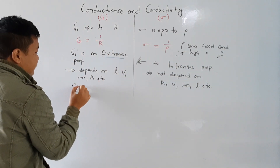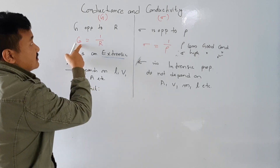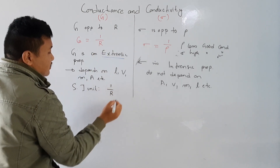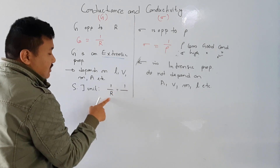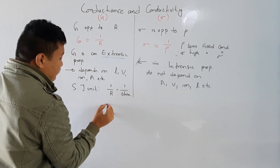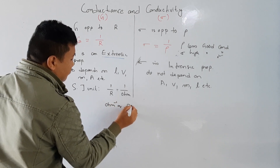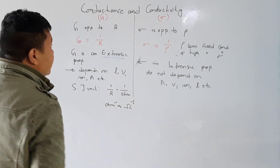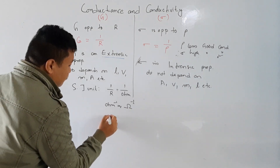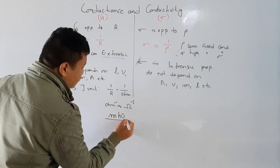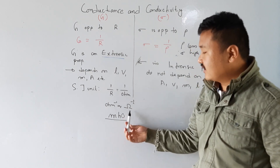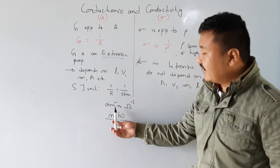The SI unit of conductance: since G equals 1 by R, the SI unit is 1 by Ohm, which becomes Ohm inverse. So the SI unit of conductance is Ohm inverse, also written as Mho — spelled M-H-O. These are all SI units of conductance: Ohm inverse, Omega inverse, or Mho.